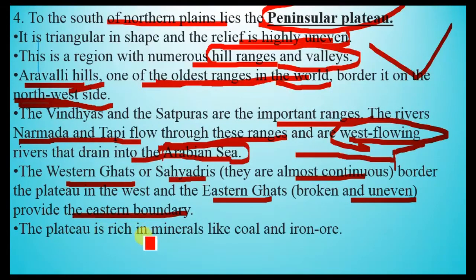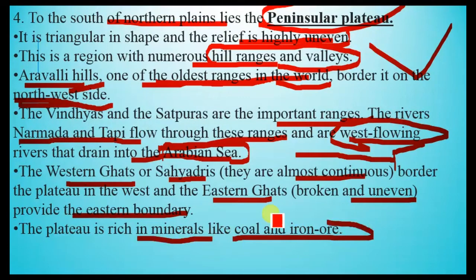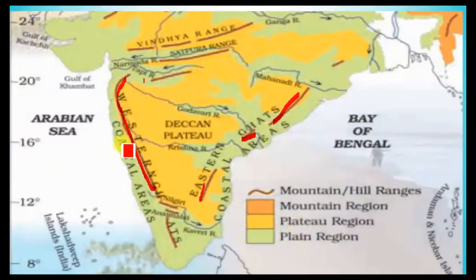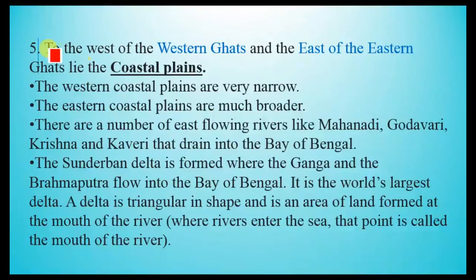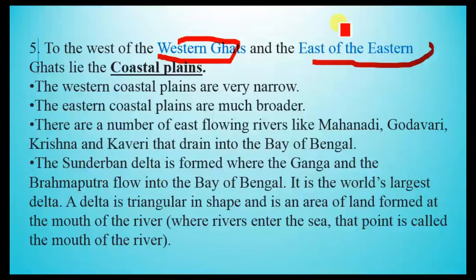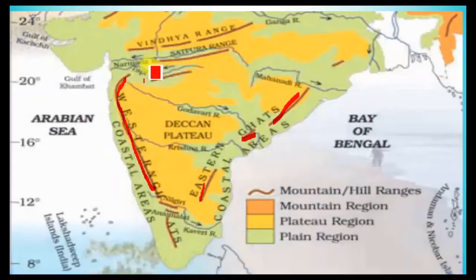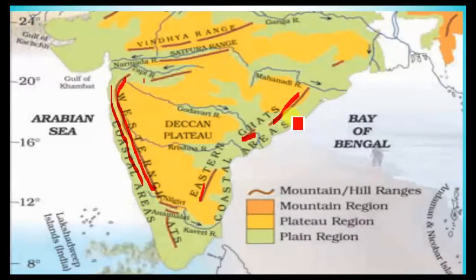The plateau is rich in minerals like coal and iron ore, with many large deposits of these minerals. To the west of the Western Ghats and east of the Eastern Ghats lie the coastal plains.